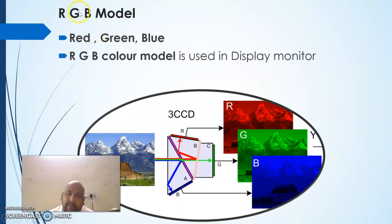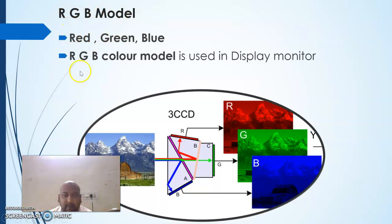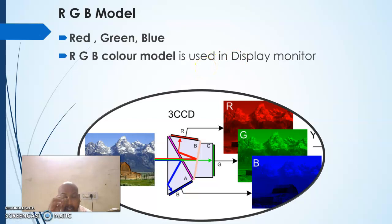The RGB model stands for Red, Green, and Blue. This model is used as a framework for displaying images.